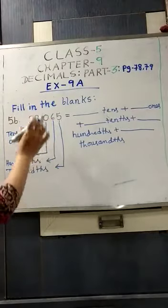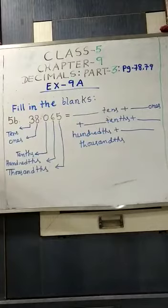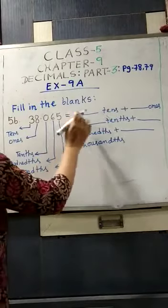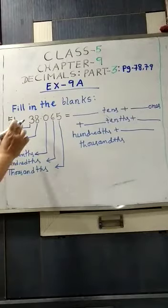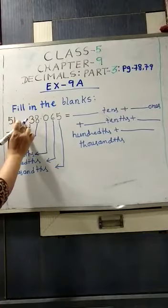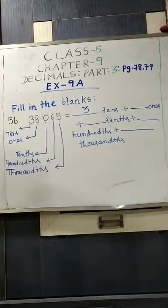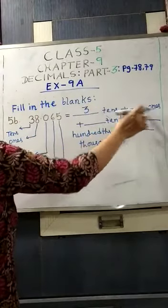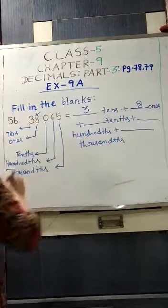So, according to their places, we have to write the digits over there. So, here it is written tens. In tens place, what is the digit? 3. So, you will put down 3 over there. Then, ones. What is there in ones? 8. So, we will put 8 over there.